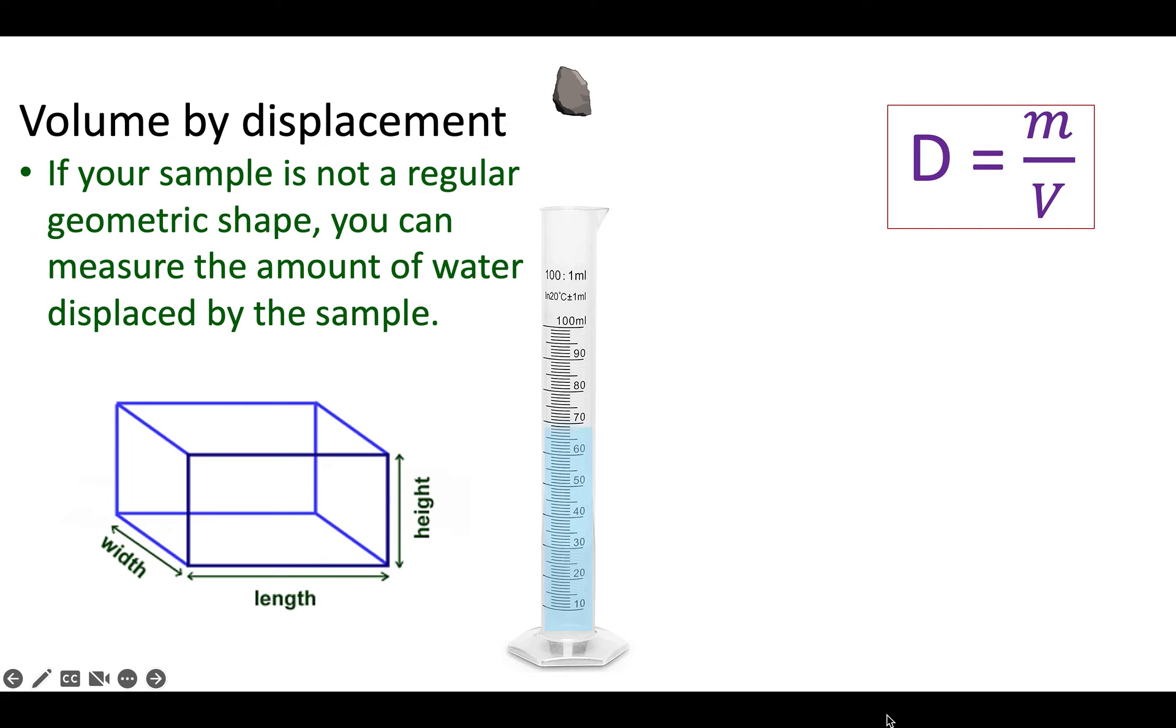But sometimes objects are not geometric. You can't do it with a ruler, like this rock here. If you wanted to find the volume of it, you really can't get out a ruler and measure it. But what we can do is find the volume of the object by displacement, by how much water it displaces.